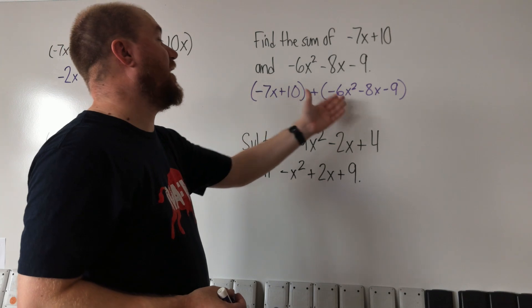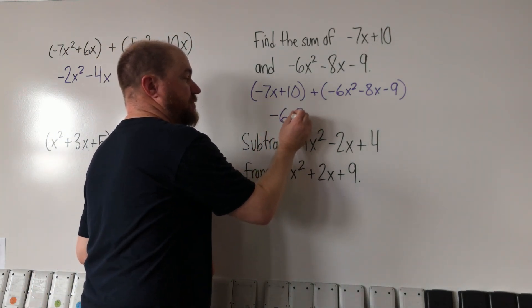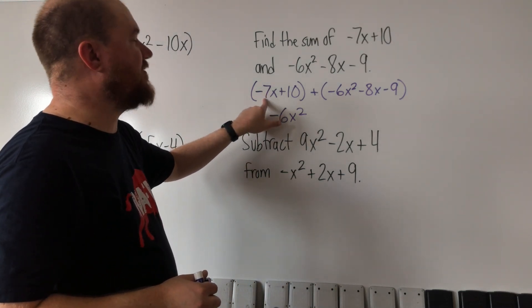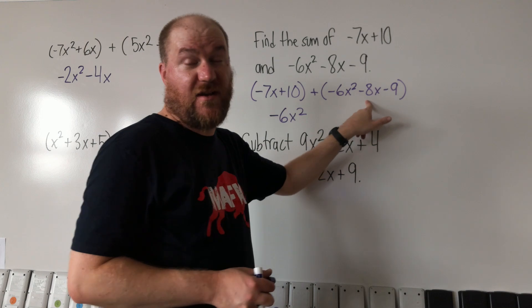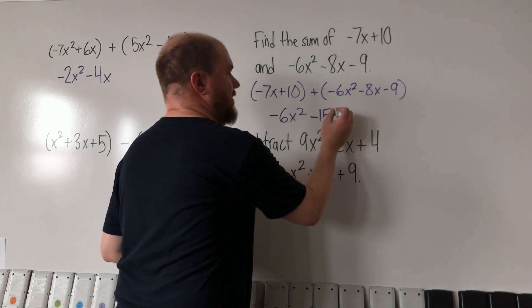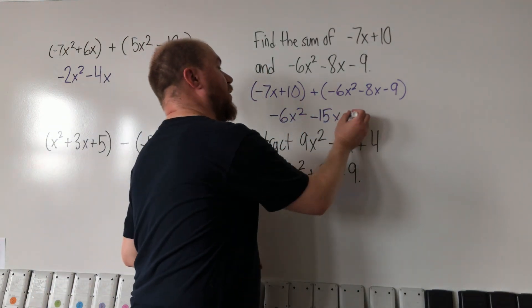There's none of them here and there's just that one there, so I'm just going to bring it down. And now I'll deal with the x's here. So we have negative 7x plus negative 8x altogether, that's a negative 15x. And 10 plus negative 9 would be plus 1.